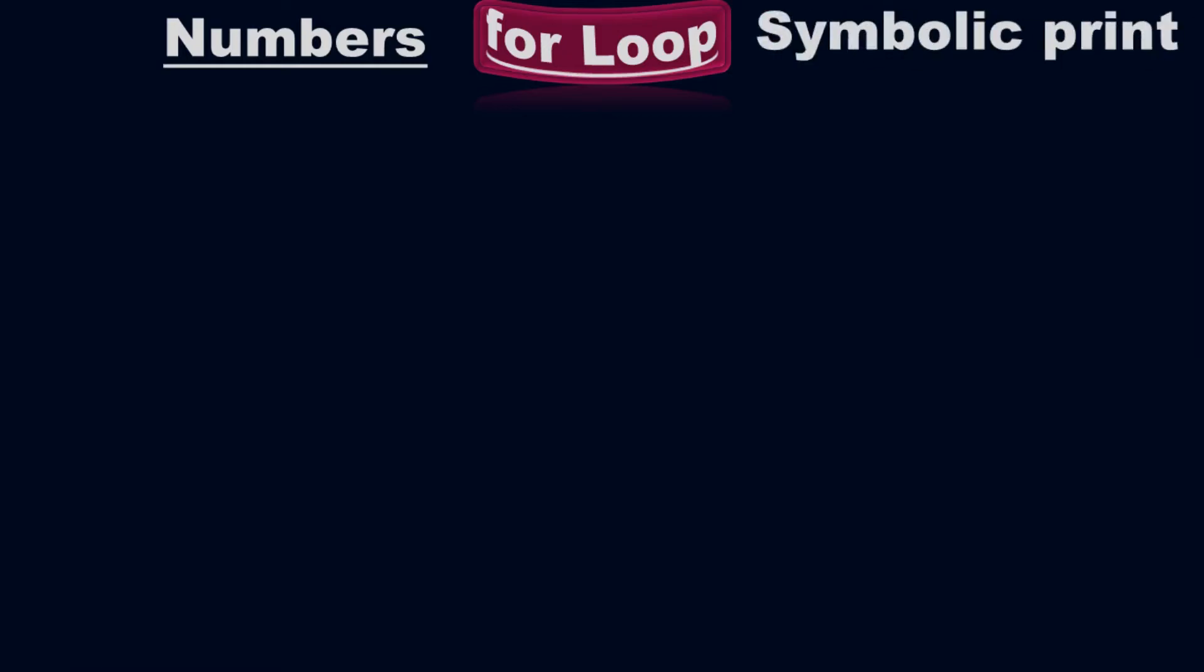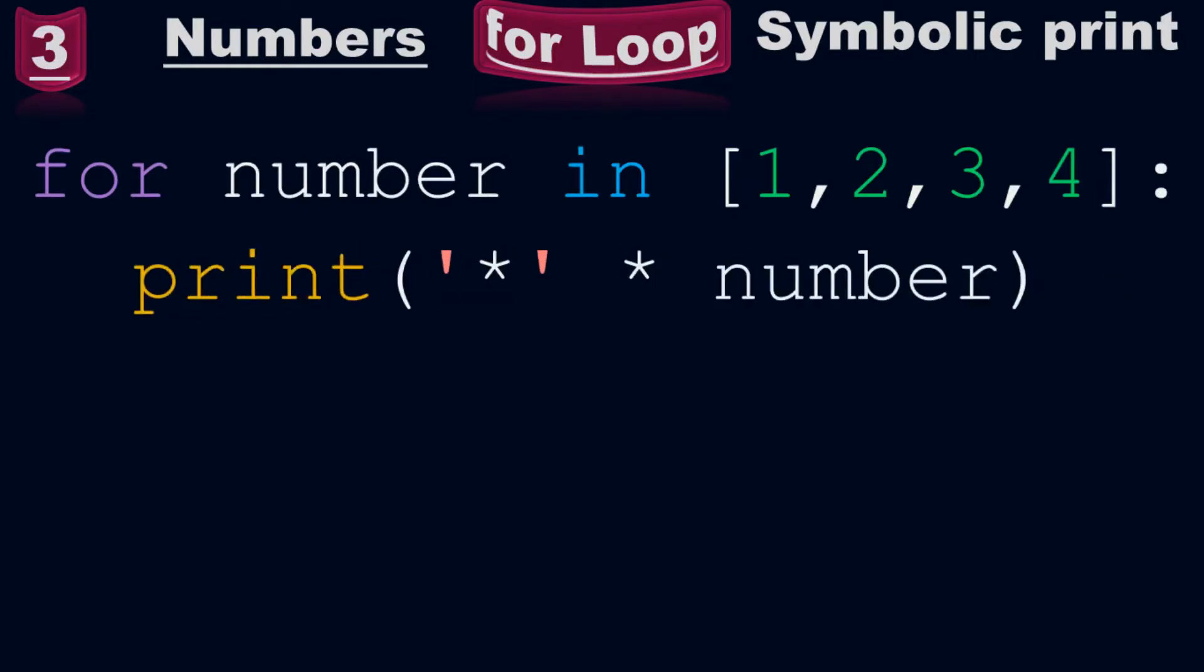Symbolic print example number 3. For number in 1, 2, 3, 4, print asterisk inside the quotes times number. You will get this pattern of the asterisks, so it is a symbolic print.